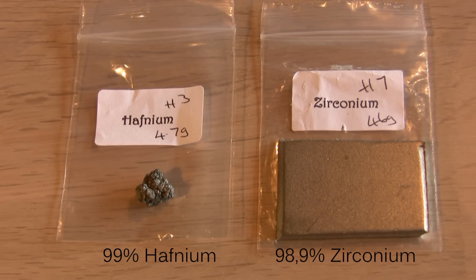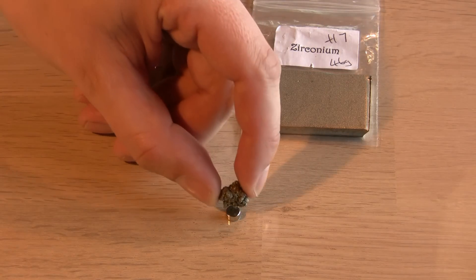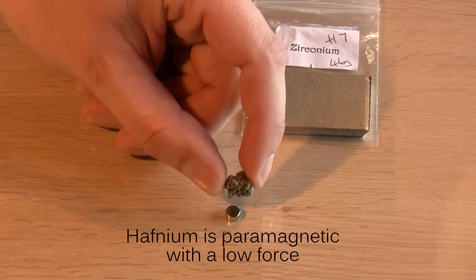Here we have what could be called the twins of metals. They are very difficult to separate so zirconium samples will always contain some hafnium and opposites.